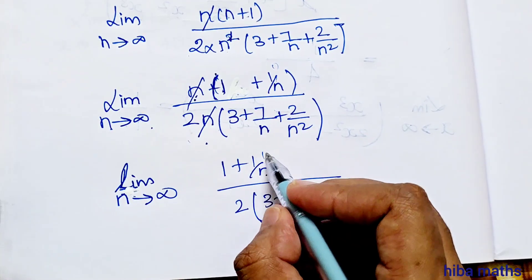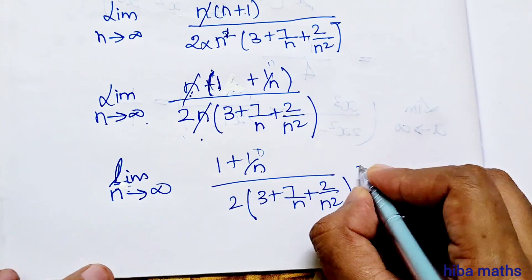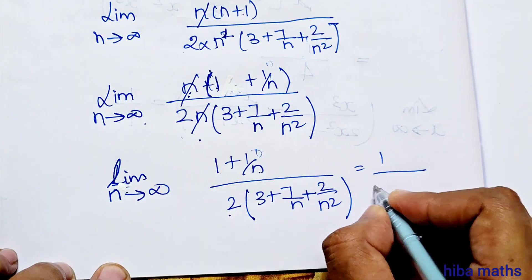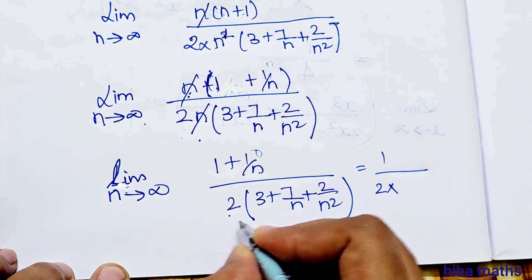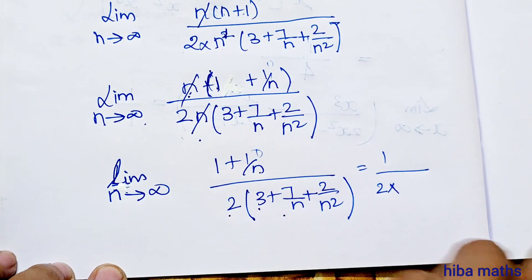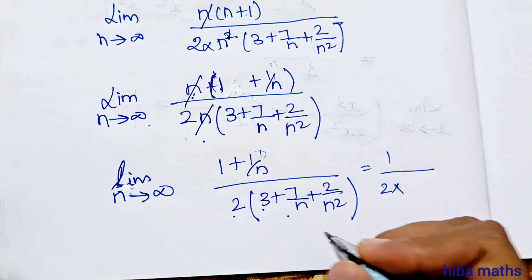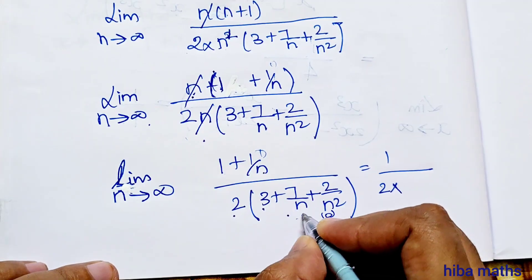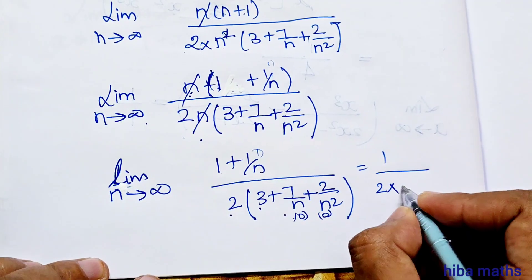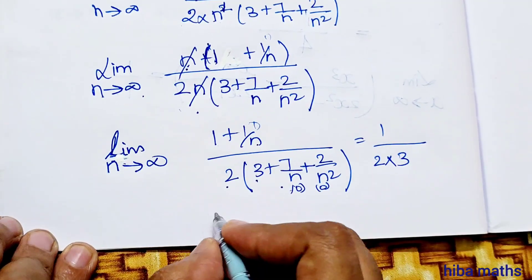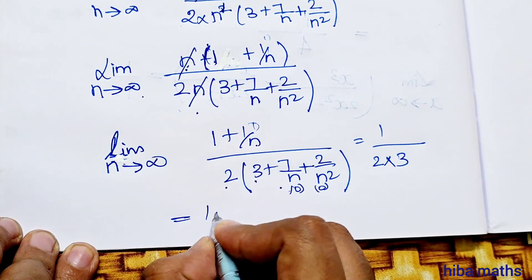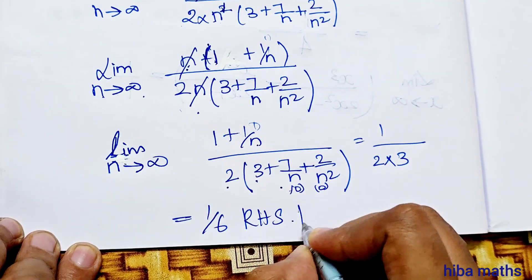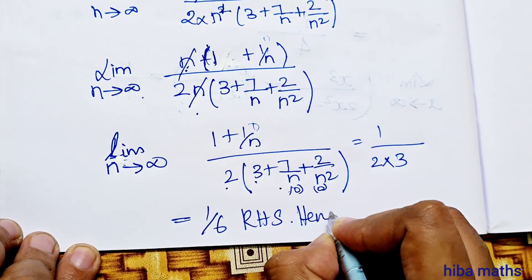Now, as n turns to infinity, 1 by n equals 0. So the numerator becomes 1 plus 0 equals 1, divided by 2. The denominator becomes 3 plus 0 plus 0 equals 3. So the result is 1 divided by 2 into 3, which equals 1 by 6. This equals the RHS. Hence proved.